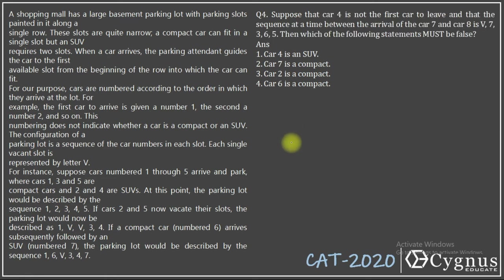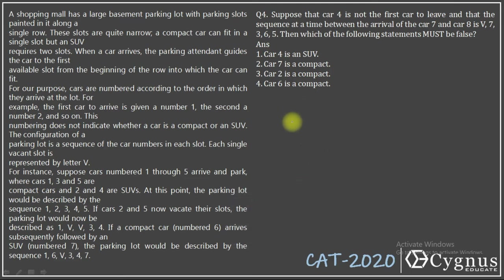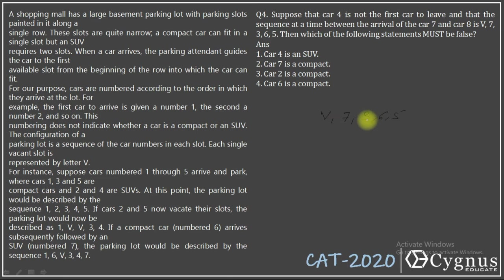Let's look at the last question. Suppose car 4 is not the first car to leave, and the sequence at the time between the arrival of car 7 and car 8 is: V, 7, 3, 6, 5. That means car 7 has already arrived and car 8 is yet to arrive. Looking at the sequence, cars 1, 2, and 4 are absent. Since car 4 is not the first to leave, either car 1 or car 2 is the first car to leave.